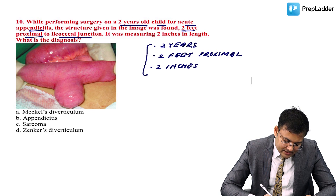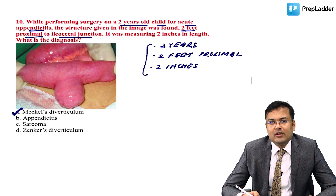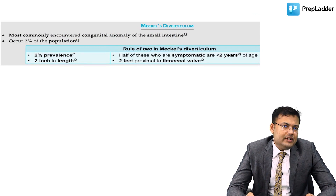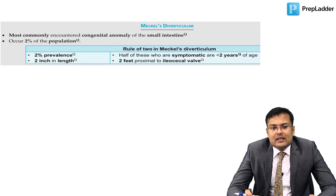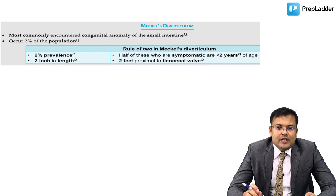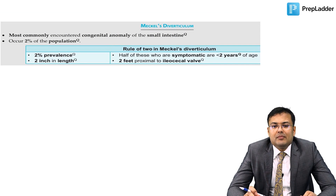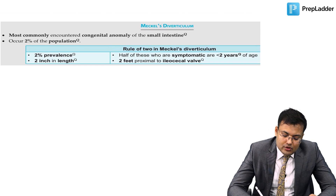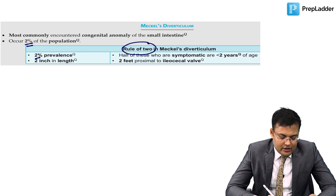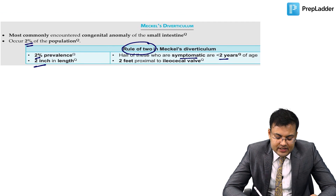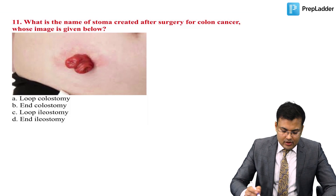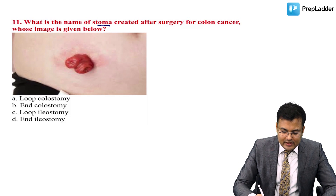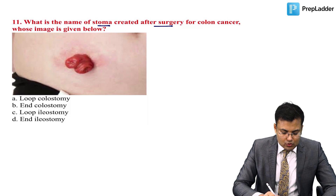Meckel's diverticulum is the most common congenital anomaly of the midgut. Rule of two: seen in 2% of the population, 2 inches in length, half of symptomatic patients are less than 2 years of age, and it is located 2 feet proximal to the ileocecal junction.